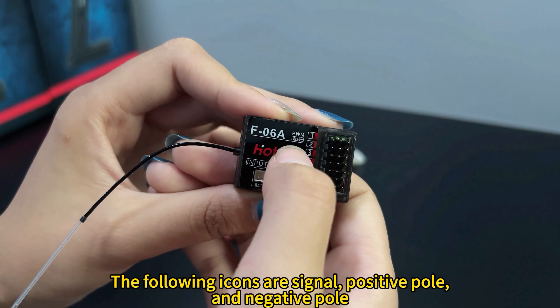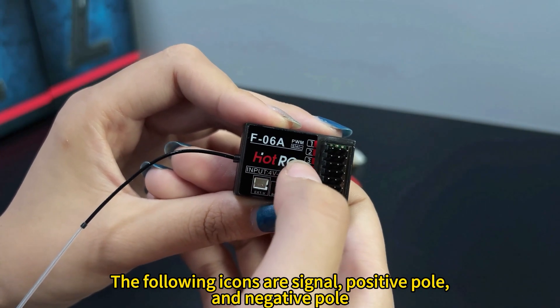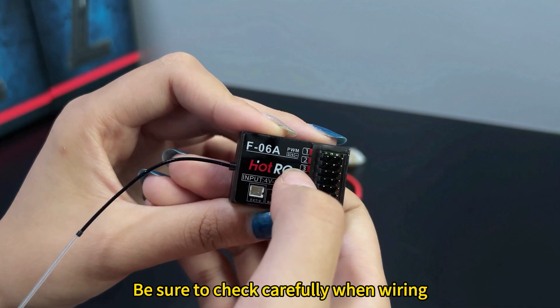The following icons are signal, positive pole, and negative pole. Be sure to check carefully when wiring.